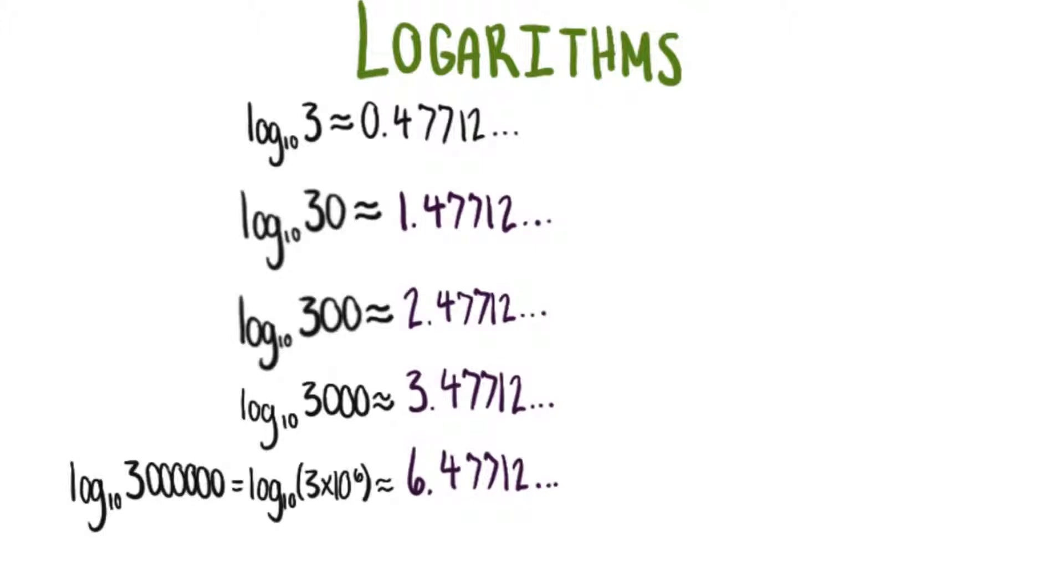Notice that this is equal to 6.47712. And we're taking the log of 3 times 10 to the 6. So we have a 6 here, and we have a 6 right here.